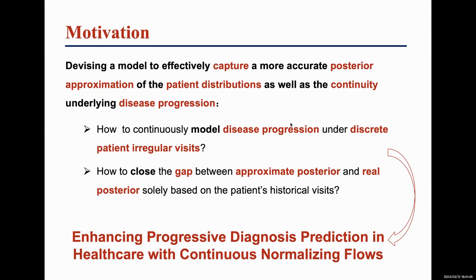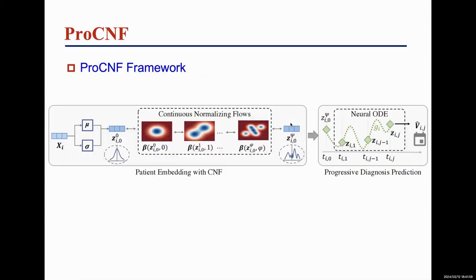However, two challenges stand in the way of achieving this goal. To address these challenges, in this work we propose Pro-CNF. The framework aims at enhancing progressive diagnosis predictions with continuous normalizing flow.